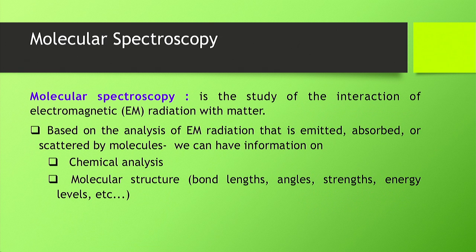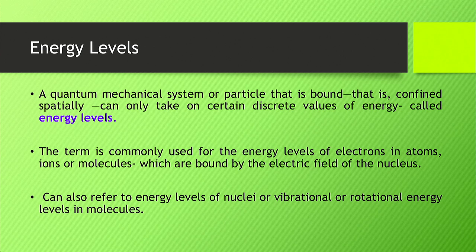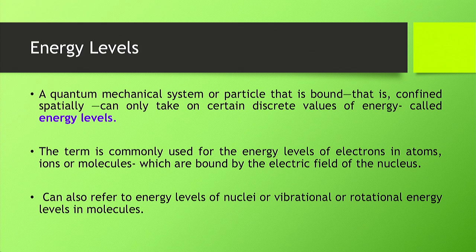In spectroscopy — specifically molecular spectroscopy — we study the interaction of electromagnetic radiation with matter. Based on the analysis of electromagnetic radiation absorbed or emitted, we can gather information about the chemical composition and molecular structure of a material. For any quantum mechanical system or particle in a bound state — meaning it is confined spatially — it can only take discrete values of energy. Those discrete values are called energy levels. This term is commonly used for the energy levels of electrons in an atom, ion, or molecule, which are bound by the electric field of the nucleus through Coulomb's potential.